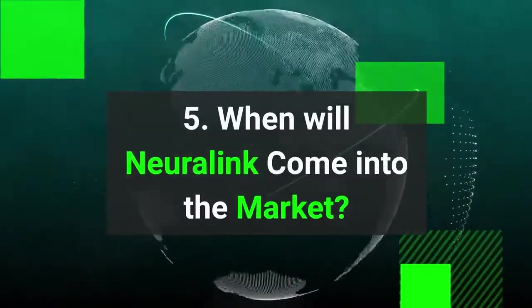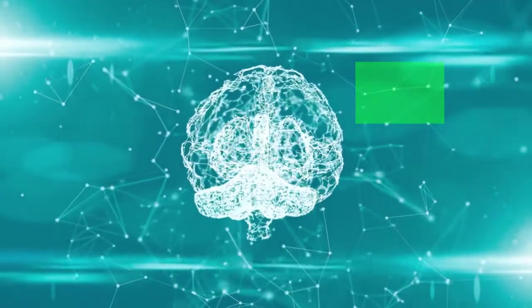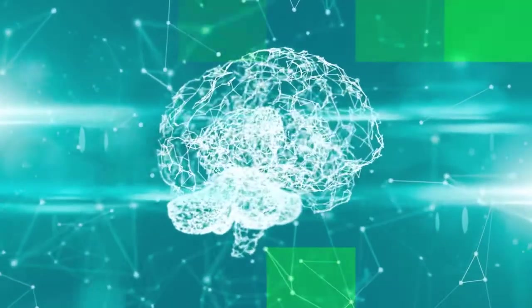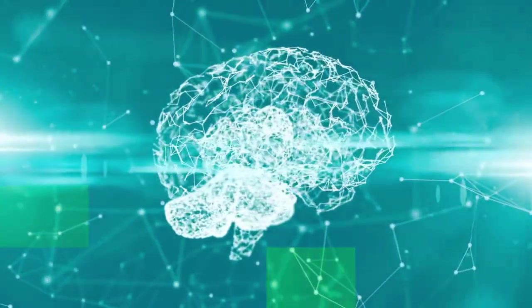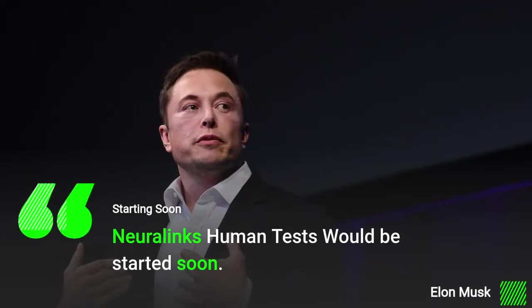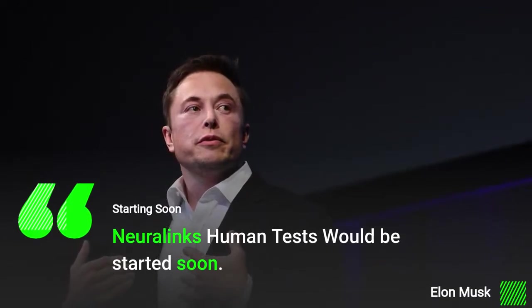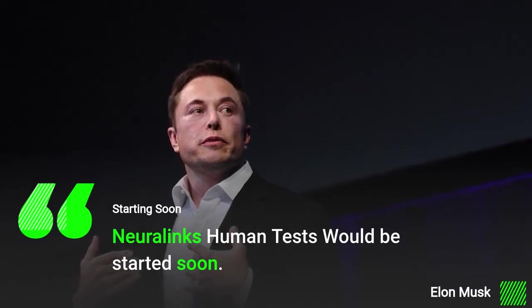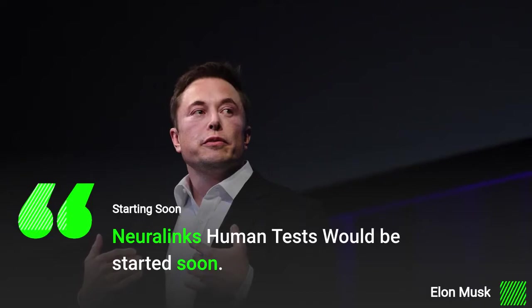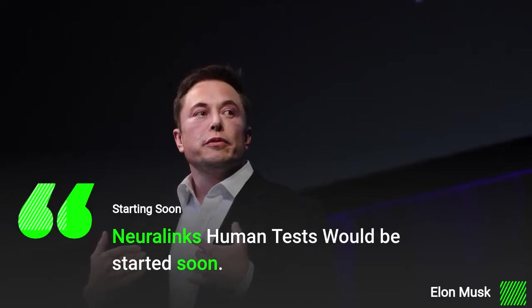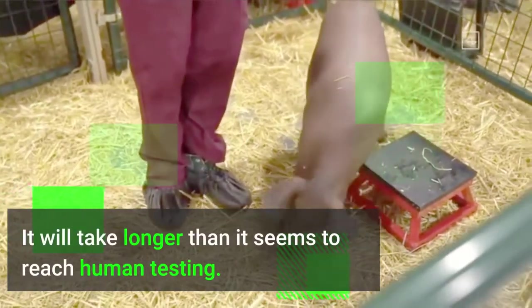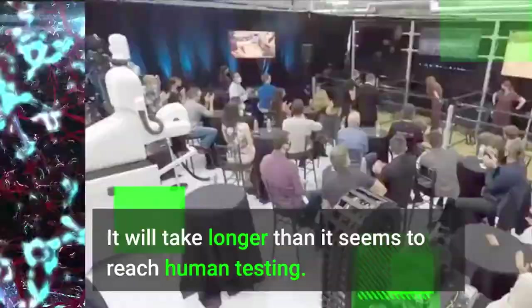When will Neuralink come into the market? Neuralink is a revolutionary device and a complicated device. There is a negative side to it on which the scientists are still working. But Elon Musk seems to be curious to launch this product as soon as possible, as he announced in an interview that Neuralink's human tests would be started soon. It seems like Elon Musk is underestimating the time that is going to be invested in building this device to be human-friendly. In the name of progress, we have three pigs on which the device is being tested. According to other scientists' statements, and the results of the device and the pig, it feels like it will take longer for the device to reach human testing.